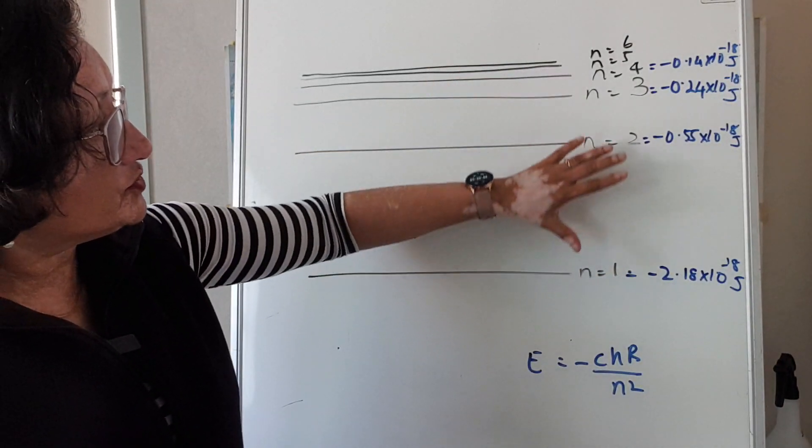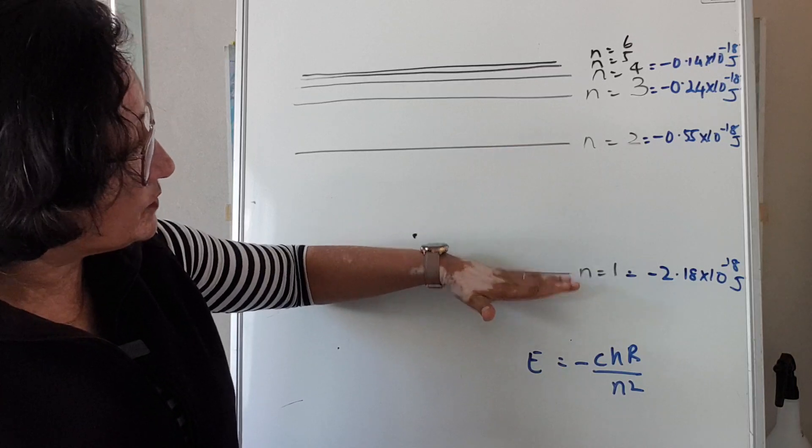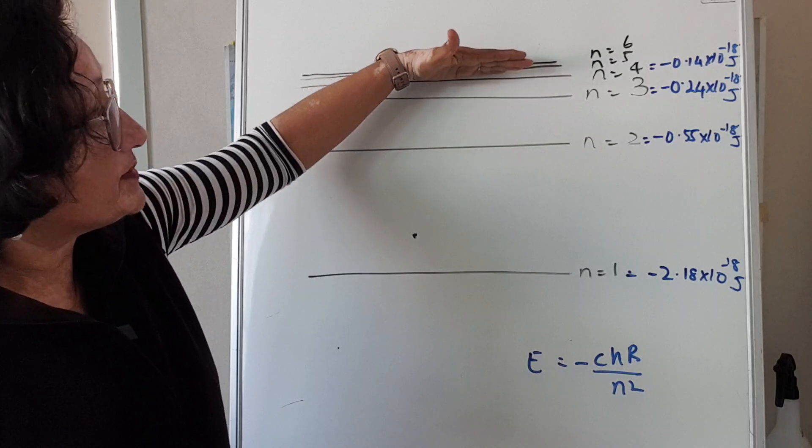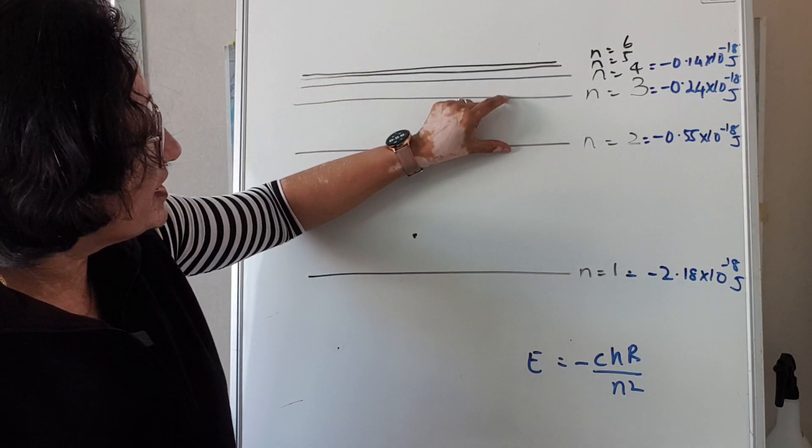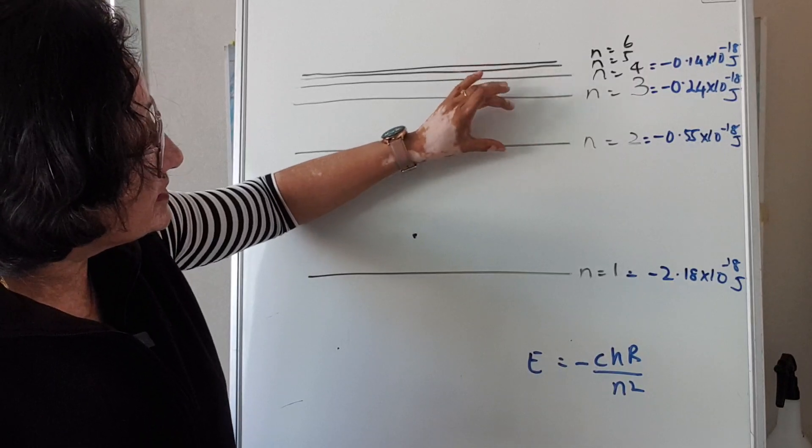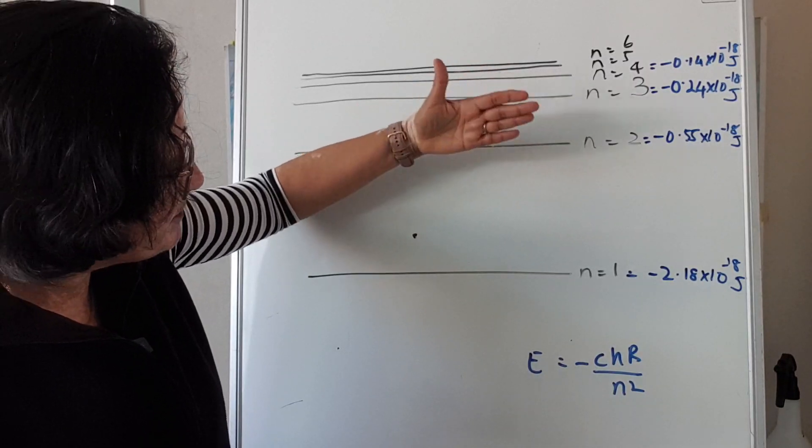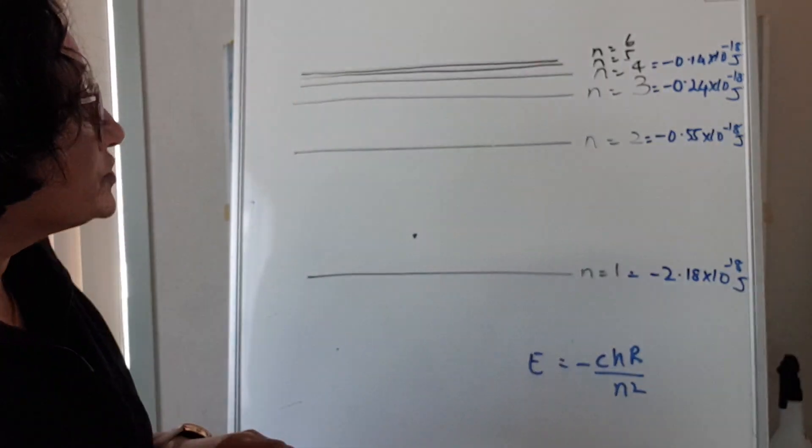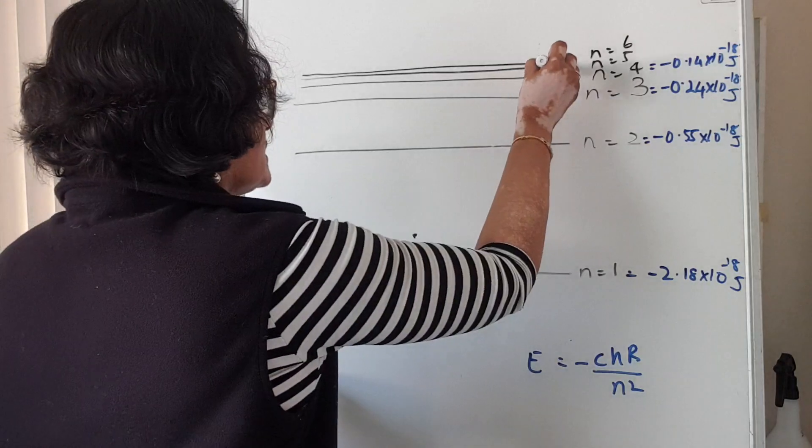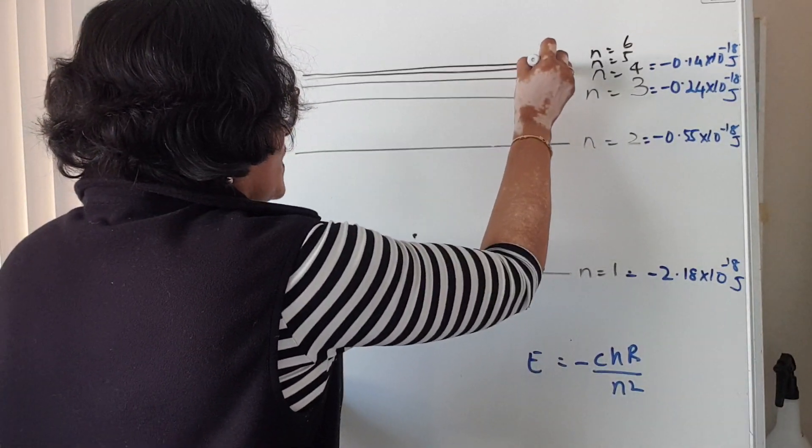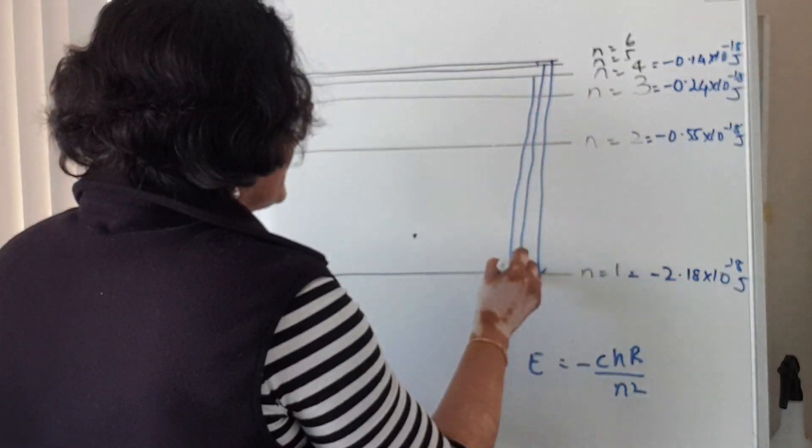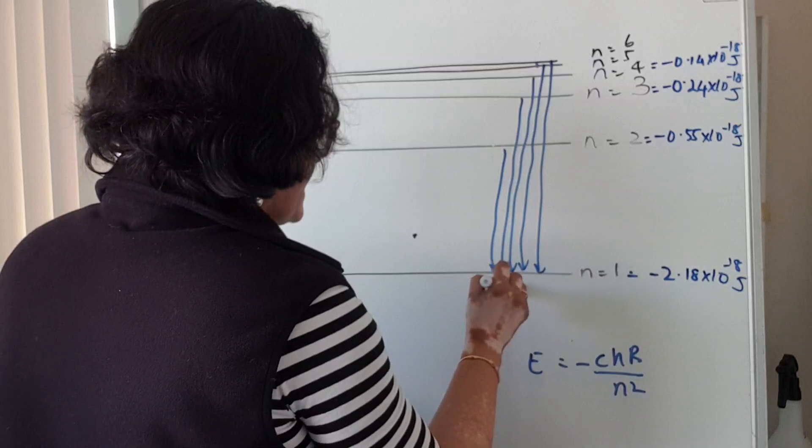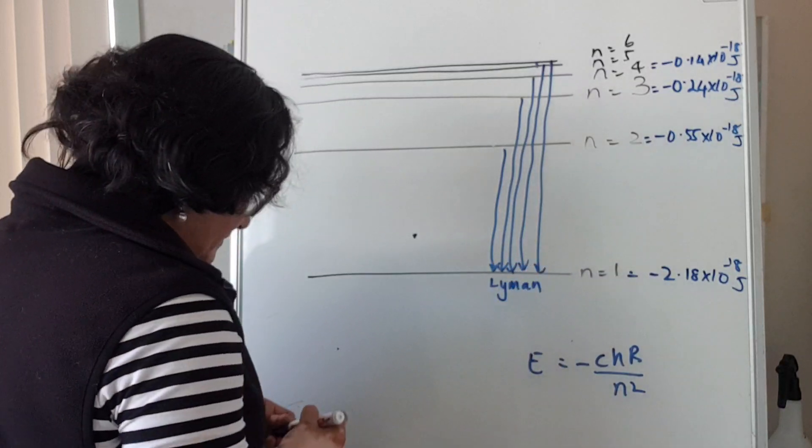If you look at these lines, if you drew it to scale you'll find that this gap between 1 and 2 is actually much bigger than the biggest gap from infinity to 2. And the gap between 3 and 2, the shortest gap over here, the shortest fall or the jump is much bigger than the biggest gap from higher to level 3. So all drops to n equals 1 from no matter what level it is, they all are in the ultraviolet part of the spectrum and this is the Lyman series.